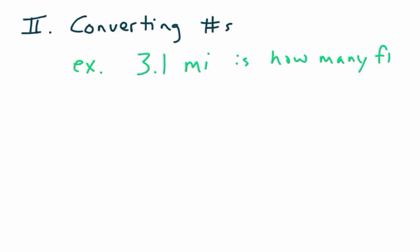So jumping ahead, now we're actually going to do the math behind how do we do these conversions. So Roman numeral 2 is converting numbers. So example 1, 3.1 miles. So if you're looking at like doing a 5K race, 3.1 miles is how many feet?